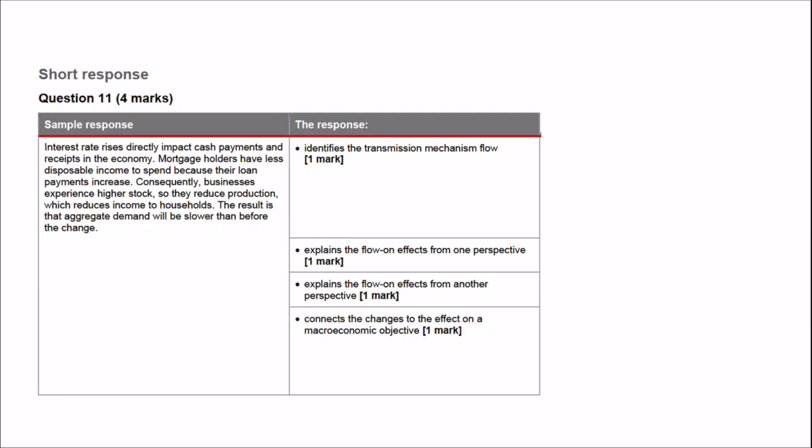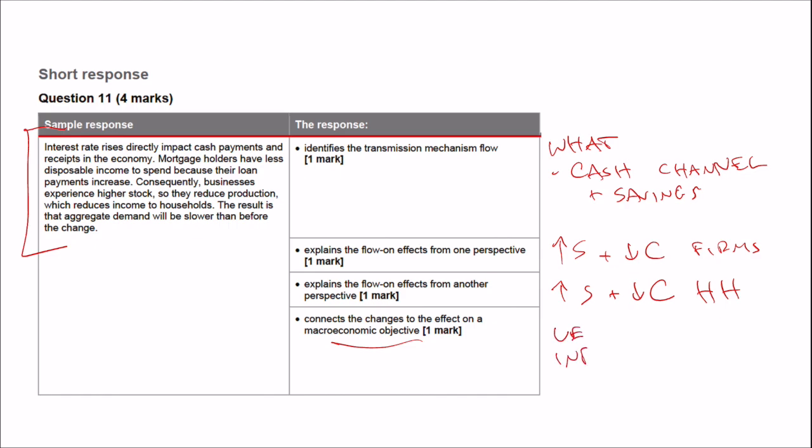Let's have a look at the marking guide. There's a sample response here. Not a super fan of it, but have a read through it anyway. Make your own critical judgment on it. Identifies the transmission mechanism flow. What are you looking at? So you're looking at what we call the cash channel, the cash and savings channel of transmission mechanism. You've talked about the flow from the perspective of increased saving and decreased consumption on firms. You've also looked at how that increase in saving and decrease in consumption has affected households. And finally, we've linked it back to the effect on a macroeconomic objective. We could link that through to unemployment, inflation, or GDP.